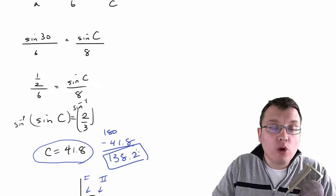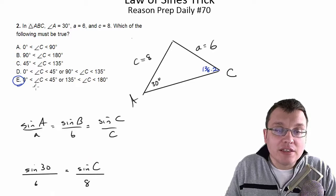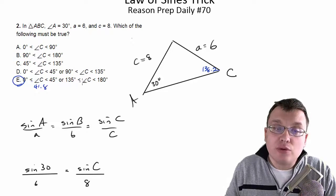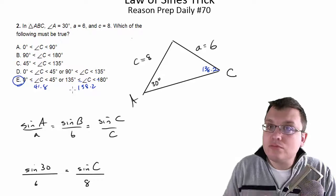My answers are 41.8 and 138.2. And that's exactly choice E, because here's the 41.8. It's between 0 and 45. And the 138.2 is between these two. So we've got choice E.